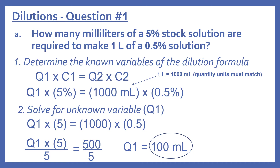So Q1 times 5% equals — for part two of the equation — 1 liter of a 0.5% solution. Q2 is 1,000 milliliters, since one liter equals 1,000 milliliters and our quantities must match in units. So it's 1,000 milliliters times 0.5%. Solving for Q1: Q1 times 5 equals 1,000 times 0.5, which is 500. Dividing both sides by 5 gives 500 divided by 5 equals 100. So Q1 equals 100 milliliters of the 5% stock solution needed to make one liter of the 0.5% solution.